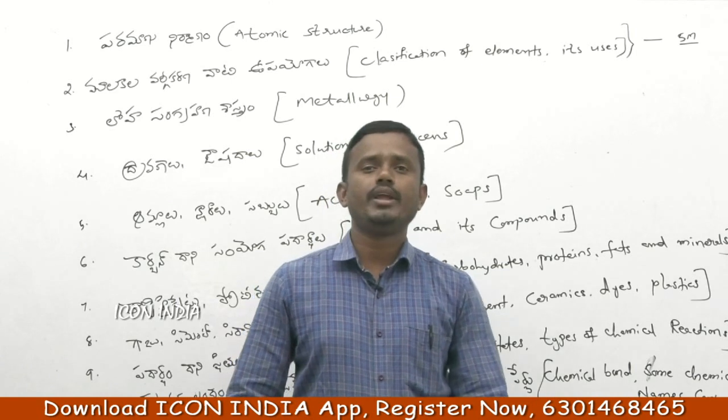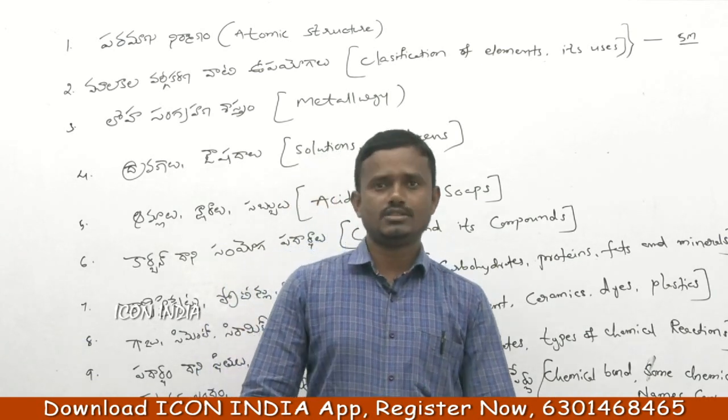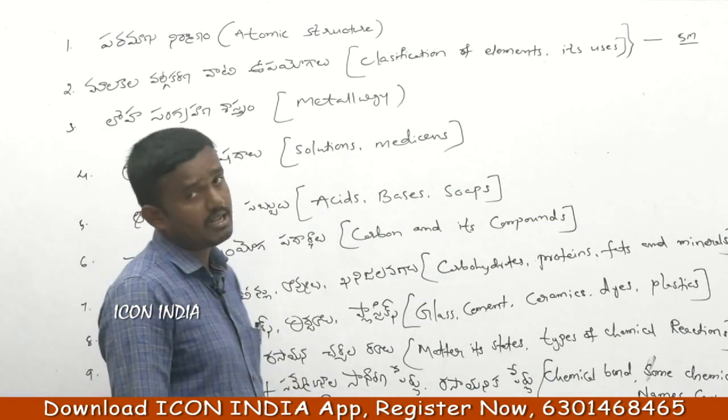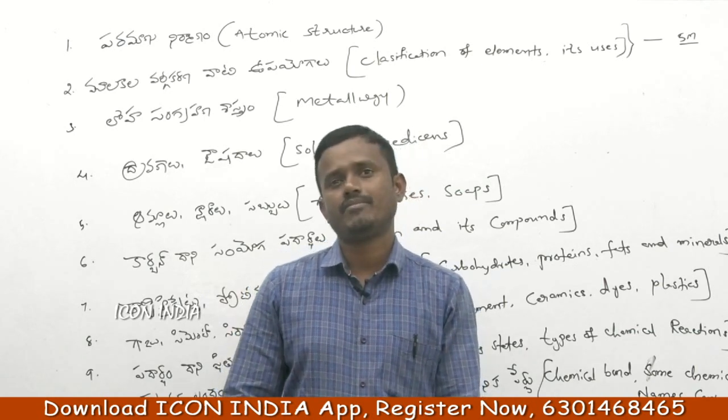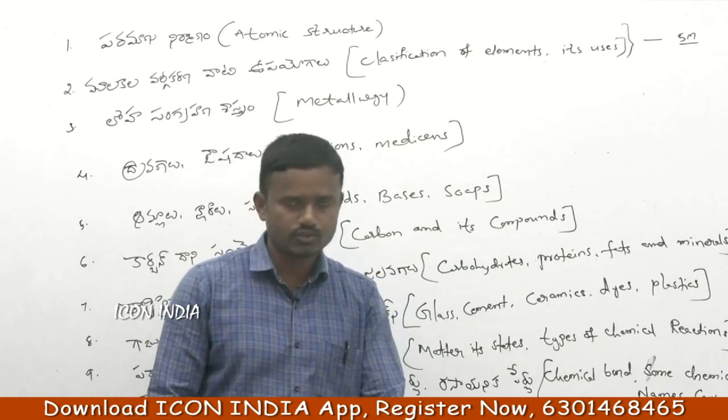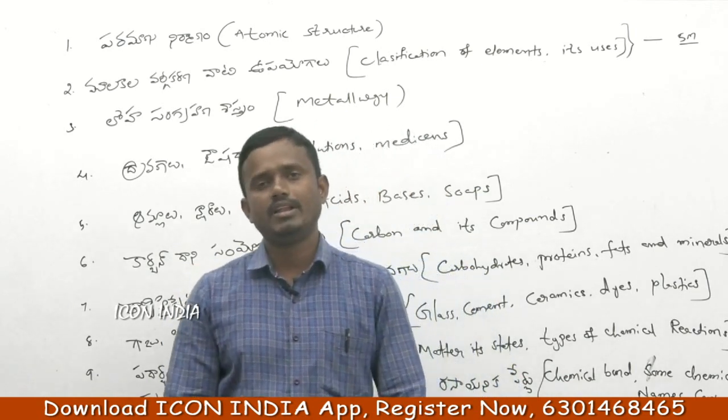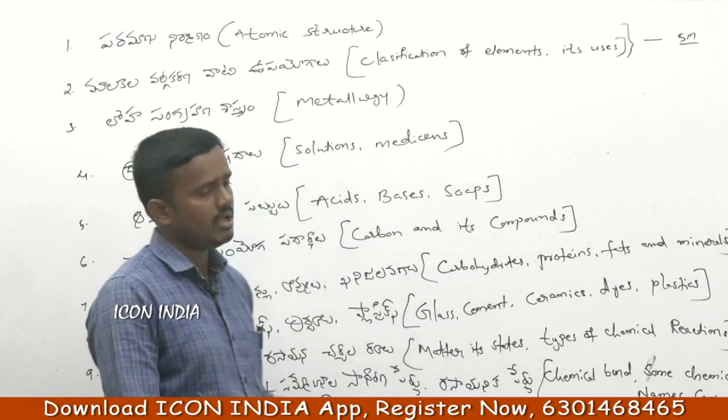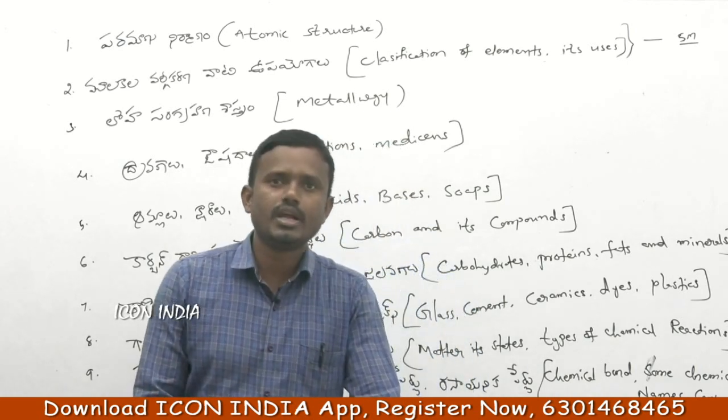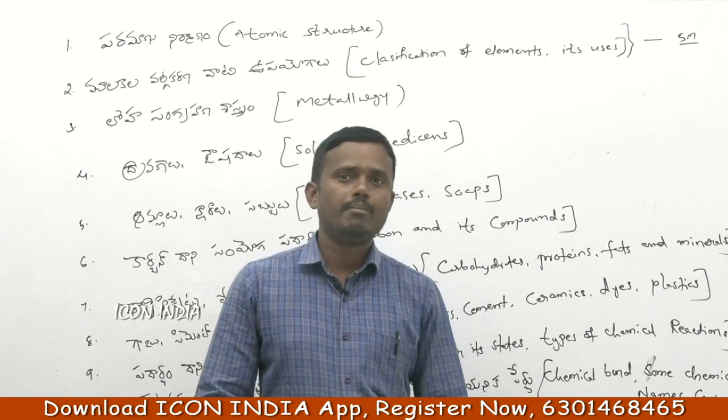In metallurgy, we discuss alloys and how metals combine. Then we talk about medicines like antipyretics, antiseptics, narcotics, non-narcotic drugs, quinine, reserpine, digitalis, atropine, belladonna, etc.